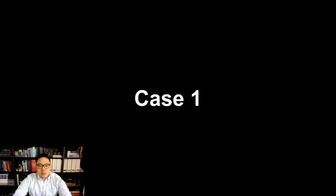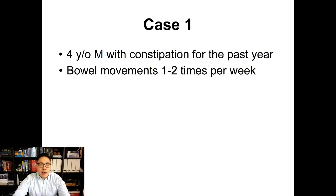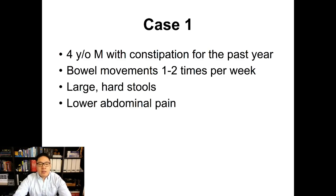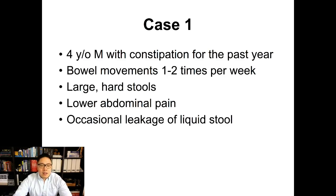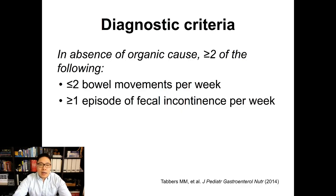First, a quick case. We have a four-year-old boy in clinic with constipation for the past year. He has bowel movements one to two times a week, large hard stools, lower abdominal pain with his bowel movements, and occasional leakage of liquid stool. I think we'd all agree he has constipation, but how do we really make that diagnosis? There are diagnostic criteria based on clinical symptoms.